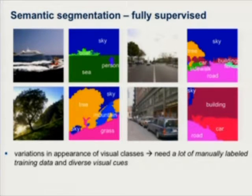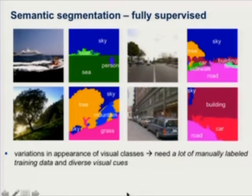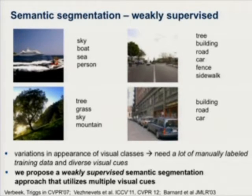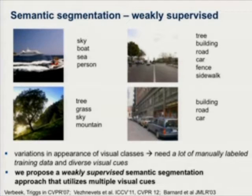Semantic segmentation in most prior work is tackled in the fully supervised scenario, meaning training uses fully labeled pixel maps where every pixel is labeled with its class. In this work we tackle it in the weakly supervised setting, which means instead of a label per pixel, you only have a set of all the labels that will appear in the image, but no idea where. This is interesting because reducing the level of supervision allows you, at least in theory, to scale to a very large number of training images and many more classes. However, it becomes difficult to integrate multiple visual cues without a pixel-level reference ground truth, and that is a main contribution of this work: weakly supervised structured output learning.